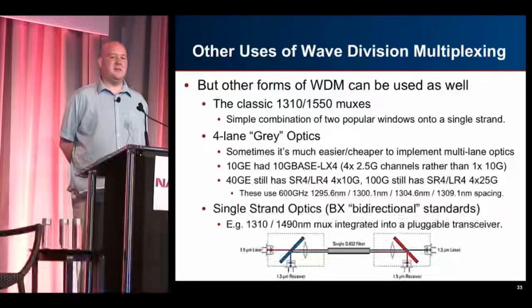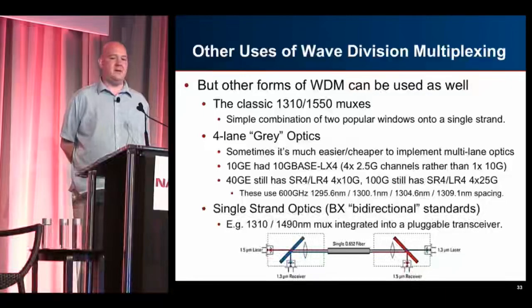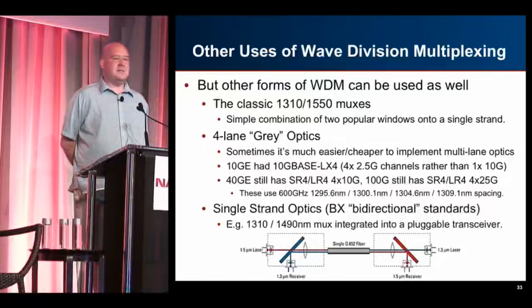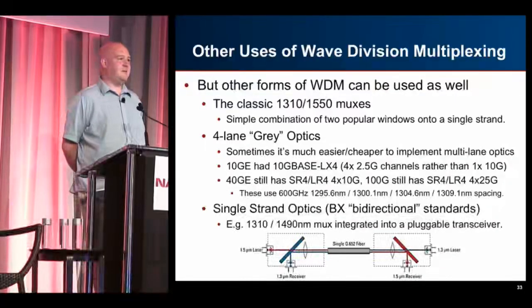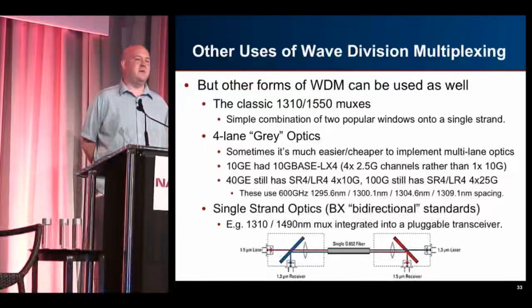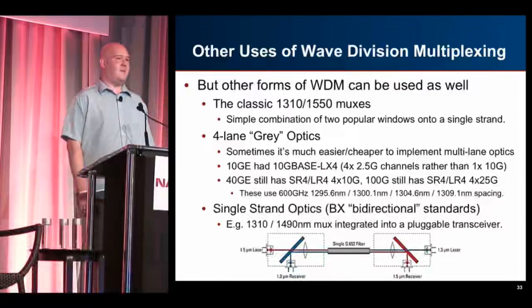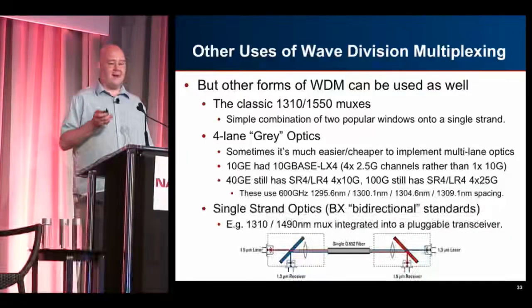These lane arrangements don't fit any classic grid — for example 40GbE and 100GbE use spacing like 1295.6 and 1300.1, following an MSA standard. You'll also see single-strand optics where the mux is integrated directly into the optic — no external box needed — letting you use a single strand of fiber by sending two different colors, one going each way. That's a really simple, cheap way to effectively double your bandwidth just by replacing the optic, without having to install, rack, or cable any additional gear.